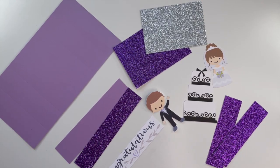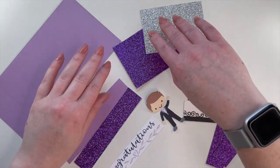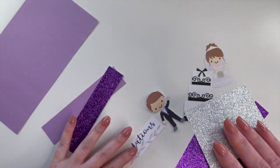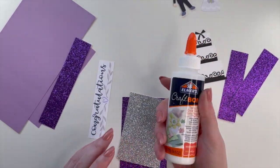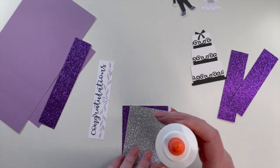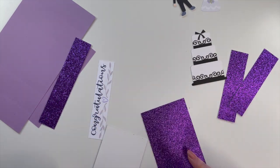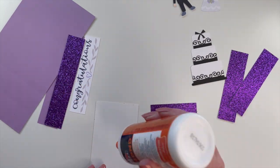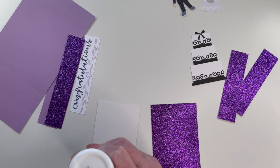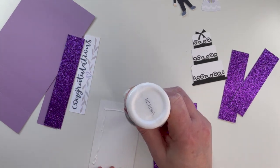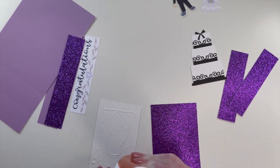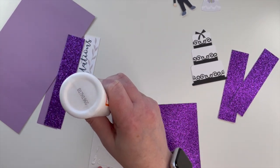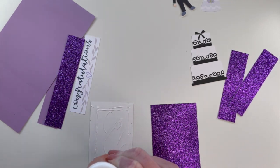Here is everything cut out. It's pretty simple to put this one together. We're going to start by layering some of these pieces. Move our groom and bride out of the way. I'm going to use craft glue to glue the glitter onto the glitter. It's just going to be easier. Don't want to put too much on but enough that it will adhere.